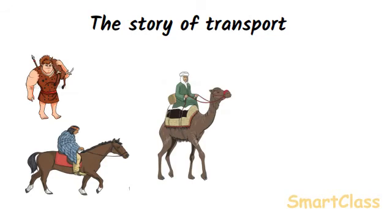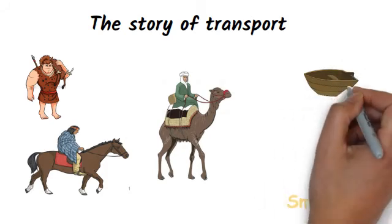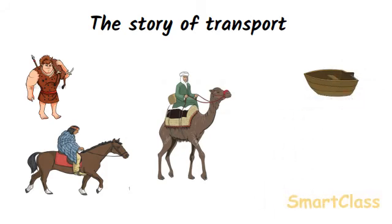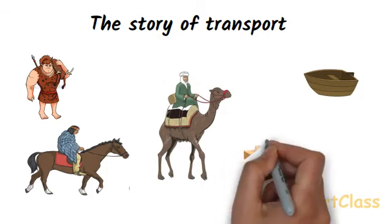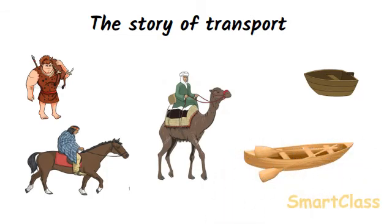In ancient times, people used boats for transport along water routes such as rivers. Initially, the boats were made of simple logs of wood in which a hollow cavity was made for people to sit and carry goods. Later on, people learned to join together planks of boats to make boats having streamlined shapes.